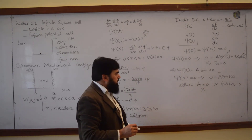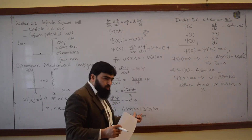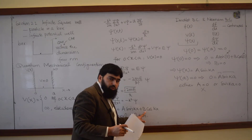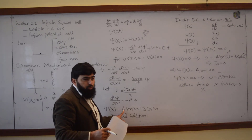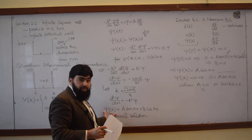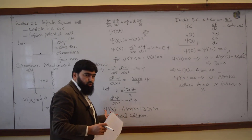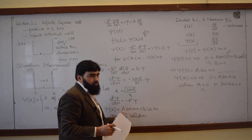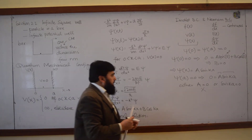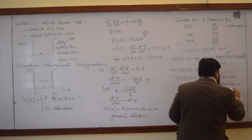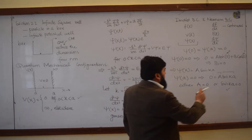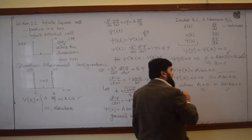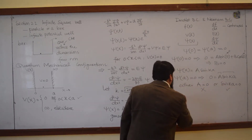Why can A not be 0? Because our equation already showed that B=0. If A also becomes 0, then there does not exist such a particle — the wave function vanishes entirely. So A cannot be 0, and therefore the only possibility for the product to equal 0 is that sin(ka)=0.